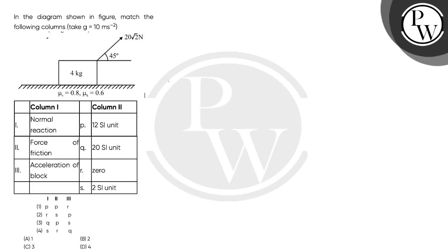Let's read the question. In the diagram shown in figure, match the following columns. Take g equals 10 meters per second squared.